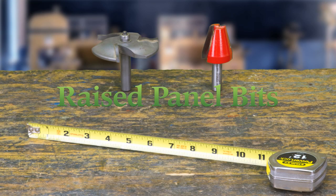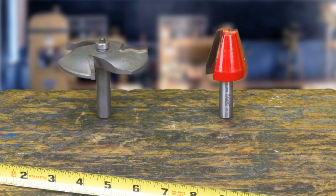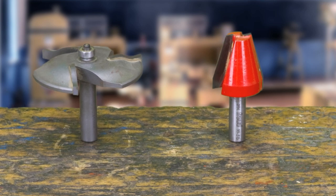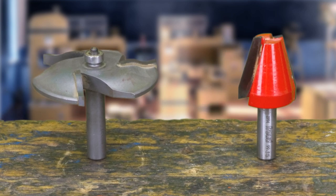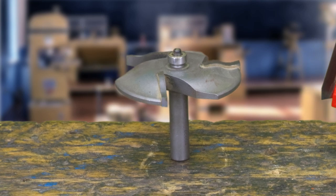There are two styles of raised panel bits, horizontal and vertical. No matter which type you're using, cut the panels in three to five heavy passes and one light finish pass. If you notice burning, you're feeding too slow. Chipping or tear-out means you're feeding too fast or the bit is dull.